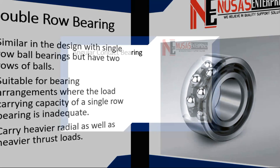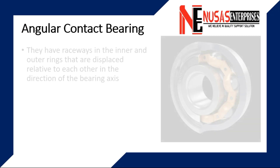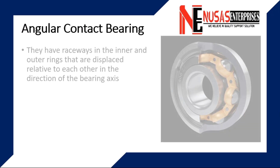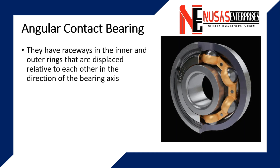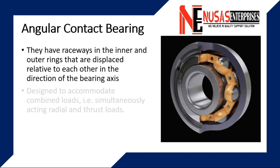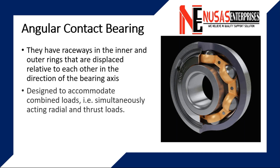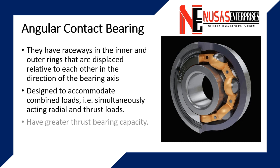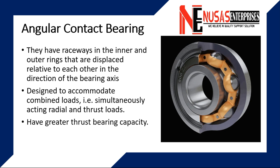Angular contact ball bearings have raceways in the inner and outer rings that are displaced relative to each other in the direction of the bearing axis. This means they are designed to accommodate combined loads, that is, simultaneously acting radial and thrust loads. Due to their specific design, they have greater thrust bearing capacity.